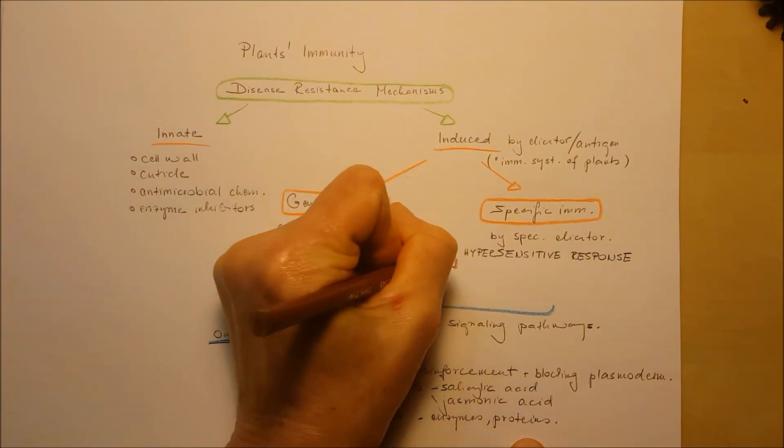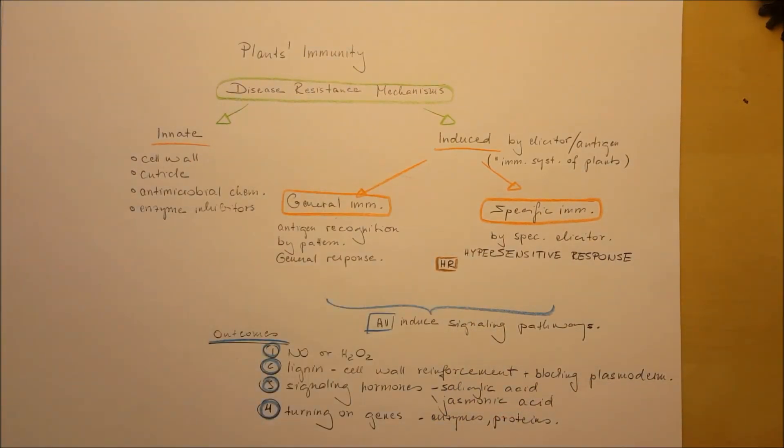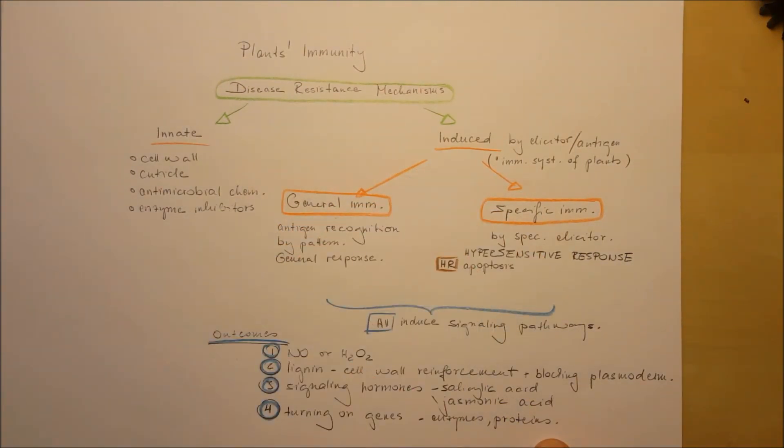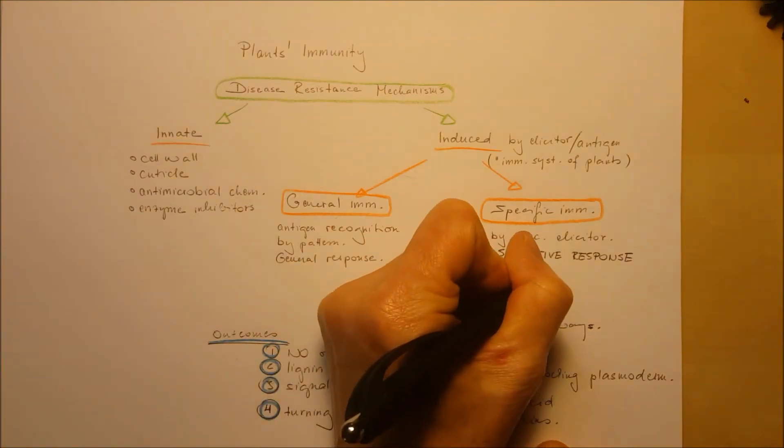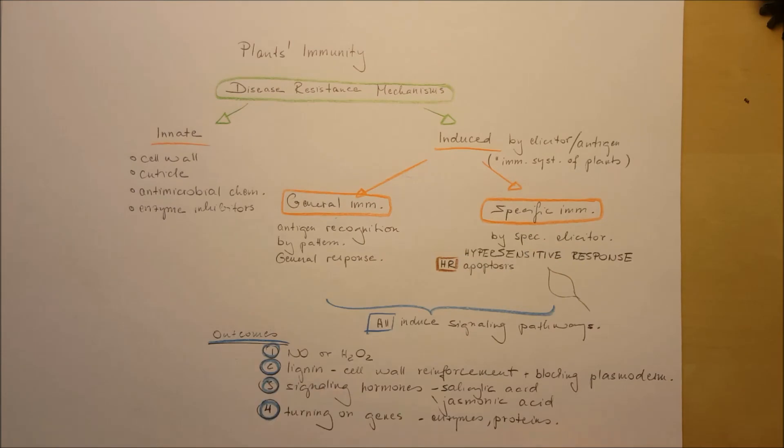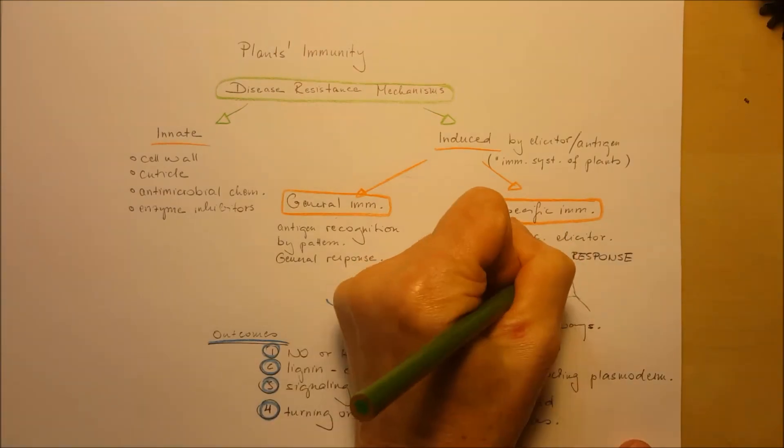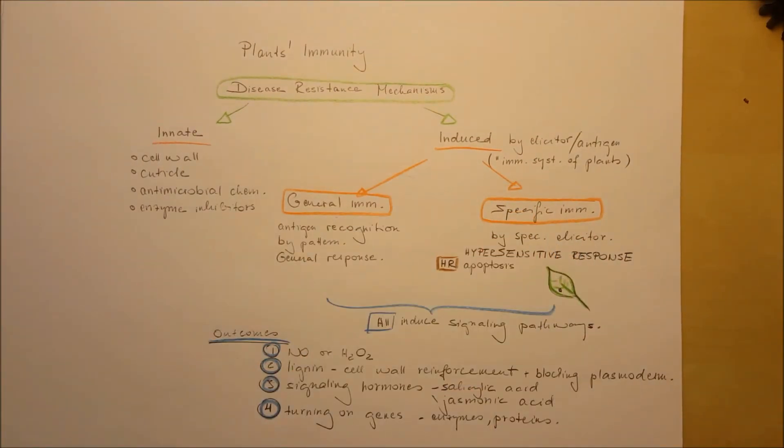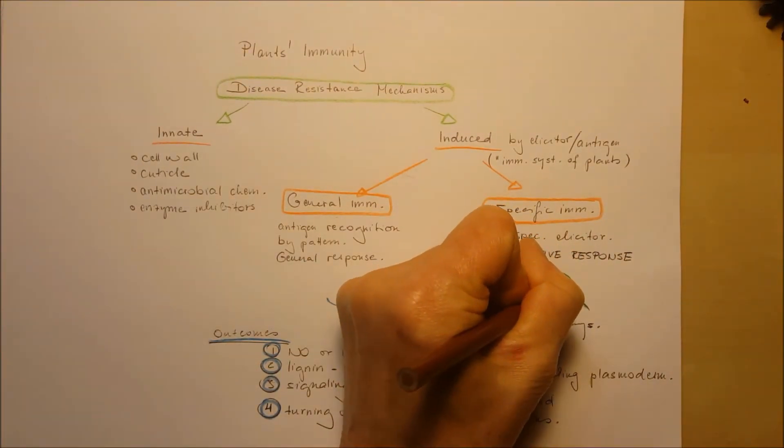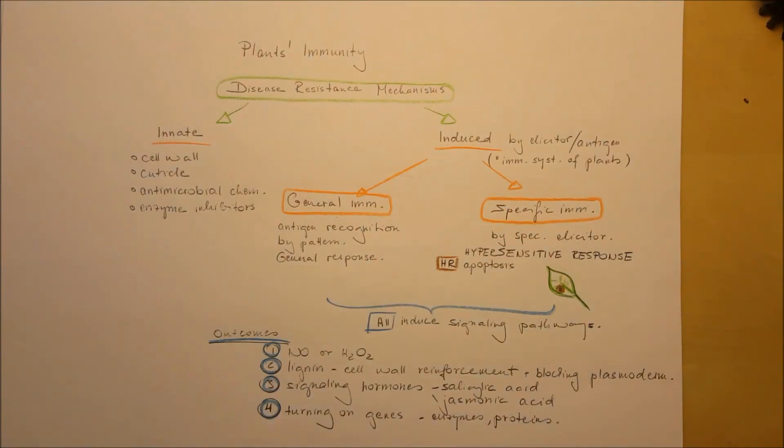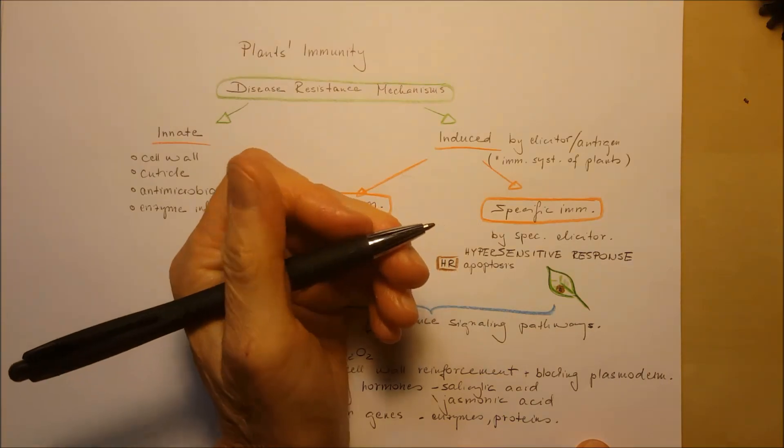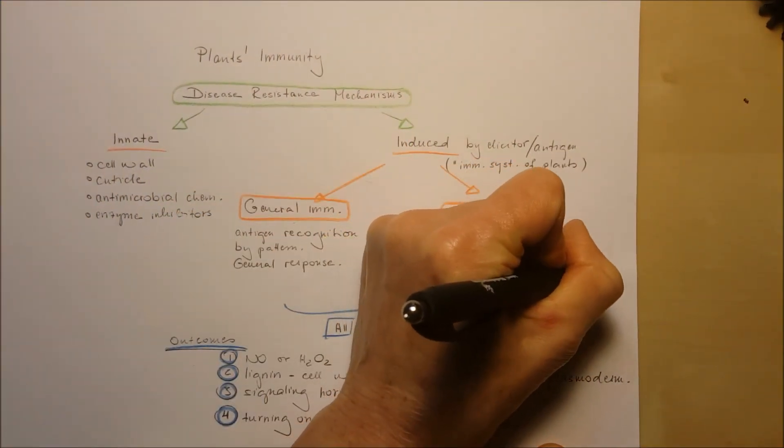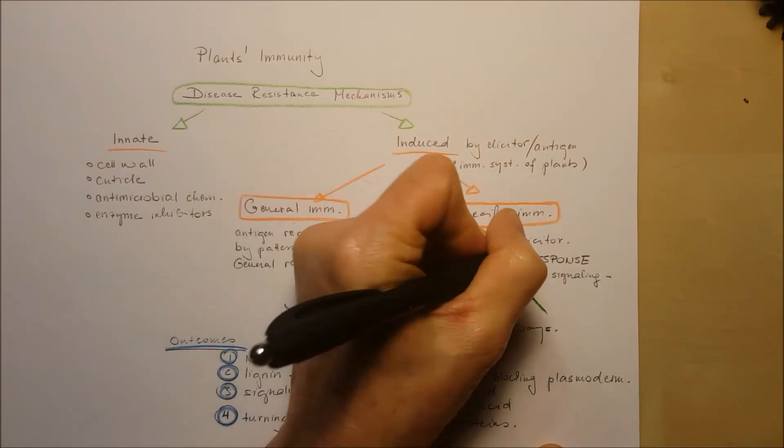A hypersensitive response is actually apoptosis, the death of the cell - whatever cell got infected and several cells around the infection to stop the spread. Here is the leaf and on the lower left area there will be a spot that's infected. Around that infection, all of the cells would go through apoptosis to stop the spreading.